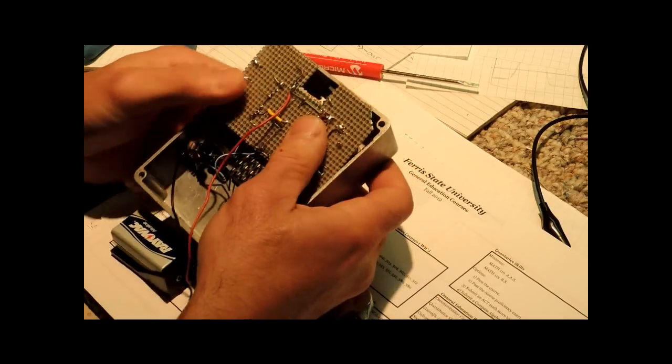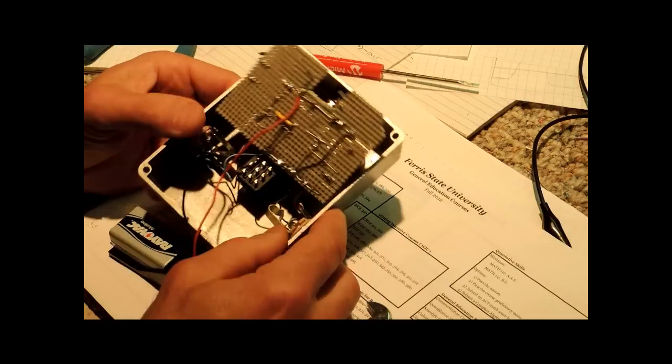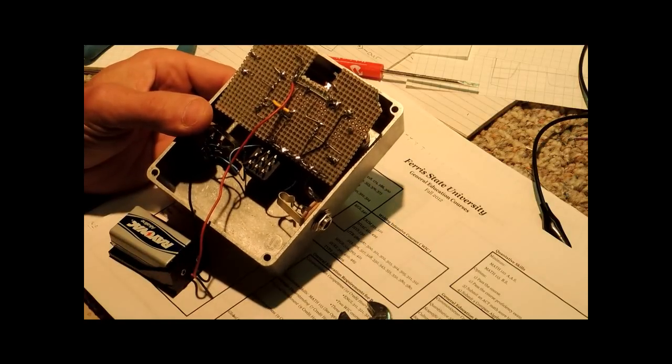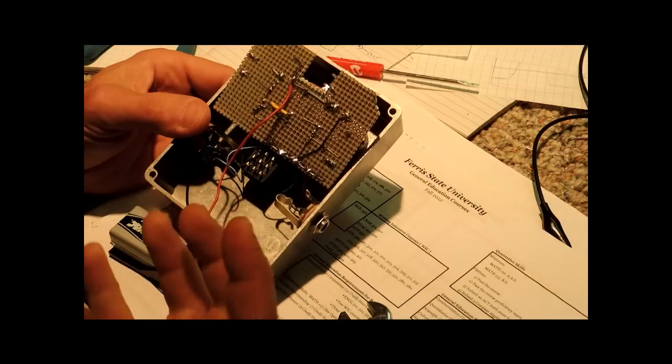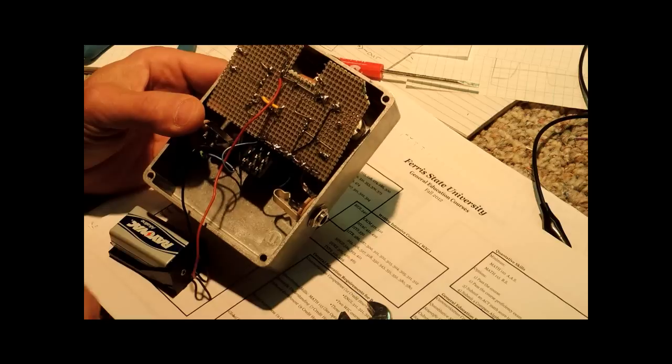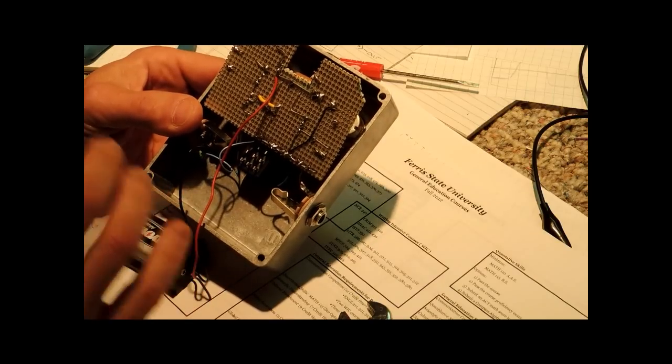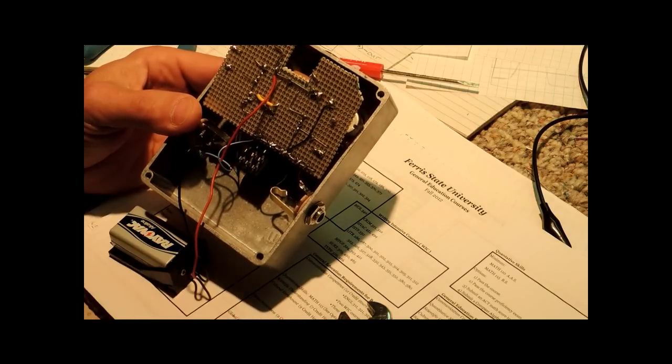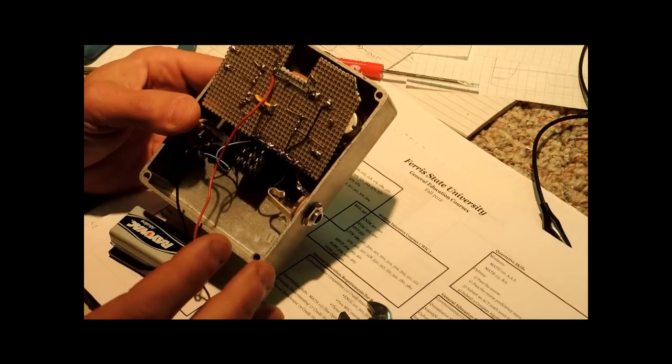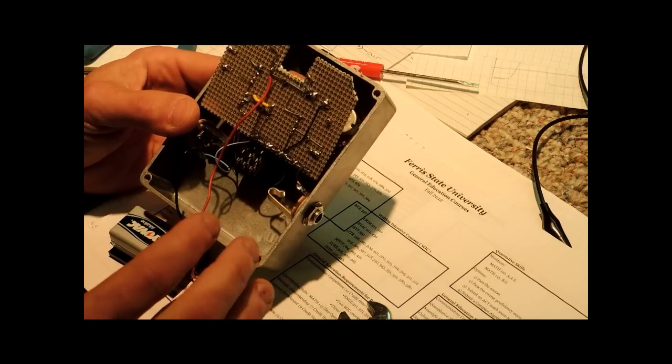And so these are the things that you need to clear up now before you get yourself too far into it. And again, testing the board outside of the box is, I think, critical, because if there's anything that needs to be fixed, you can get at it easily before you go ahead and wire it into a more permanent arrangement. And so now that we've done all that, really all that's left is just to go ahead and do the final wiring and the final assembly.